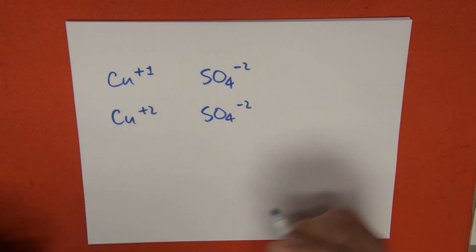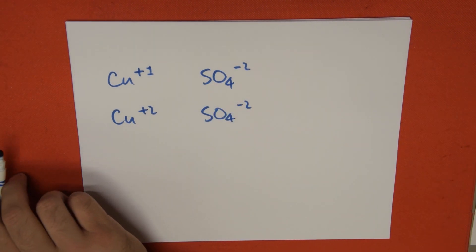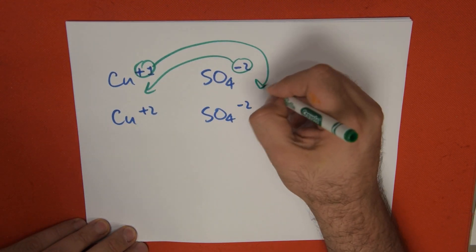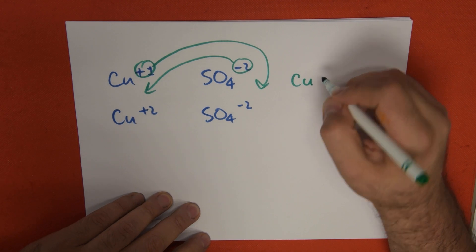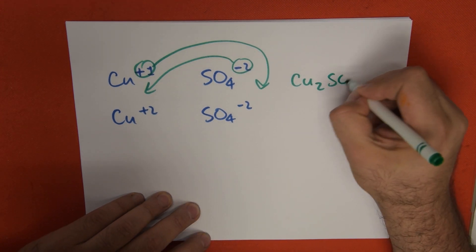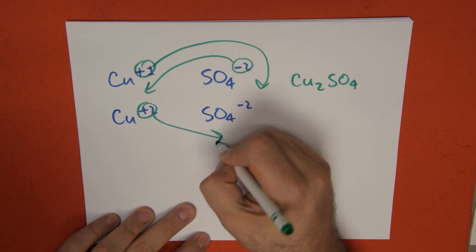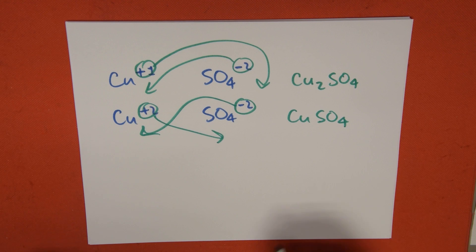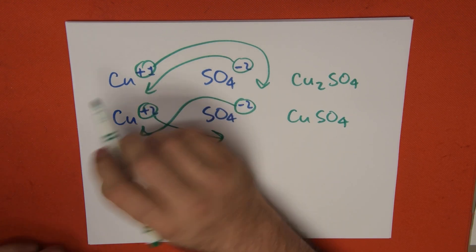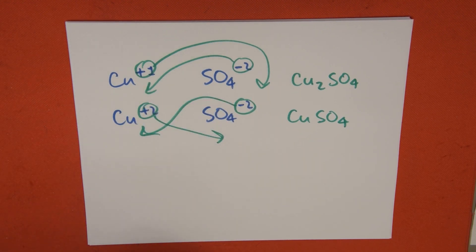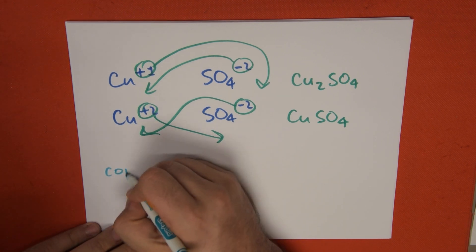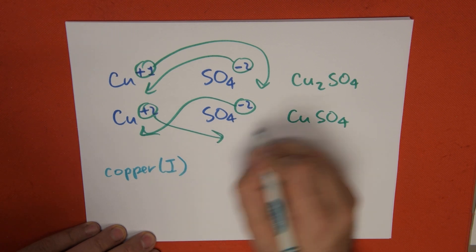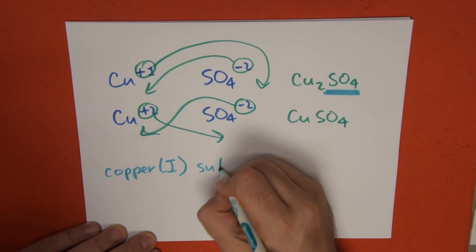When we do the criss-cross, what's going to happen? We're going to get this 2 is going to go down here, this 1 down here, and we're going to get Cu2SO4. And in this case, when we do the criss-cross, we get CuSO4. When we use the stock system name, we're going to use the name of the metal, which is copper, the valence, which is plus 1, that's a Roman numeral, and the name of the oxyanion, which in this case is sulfate.